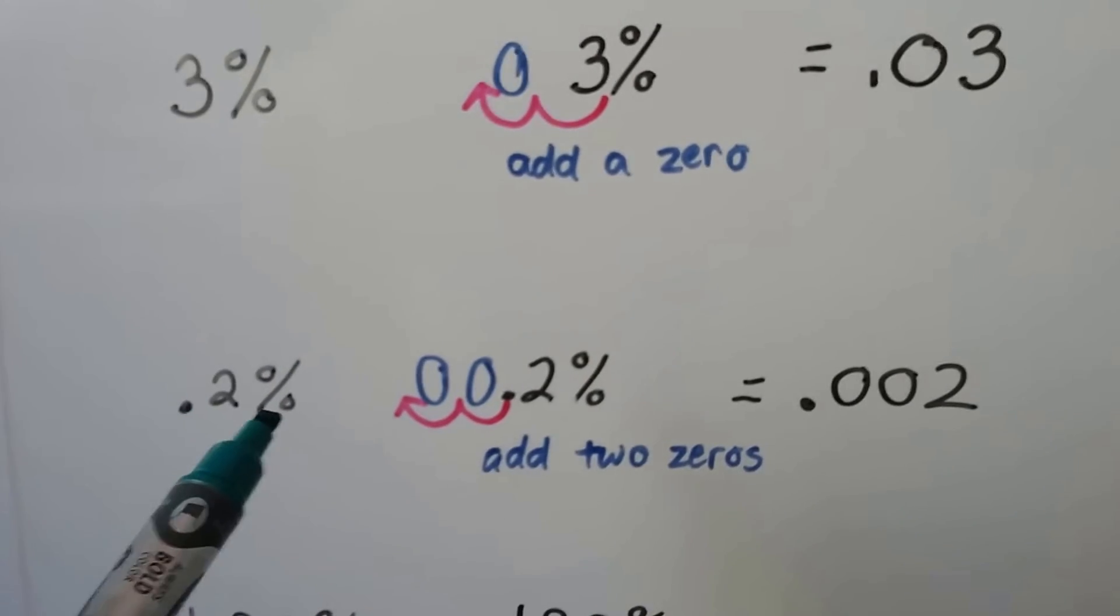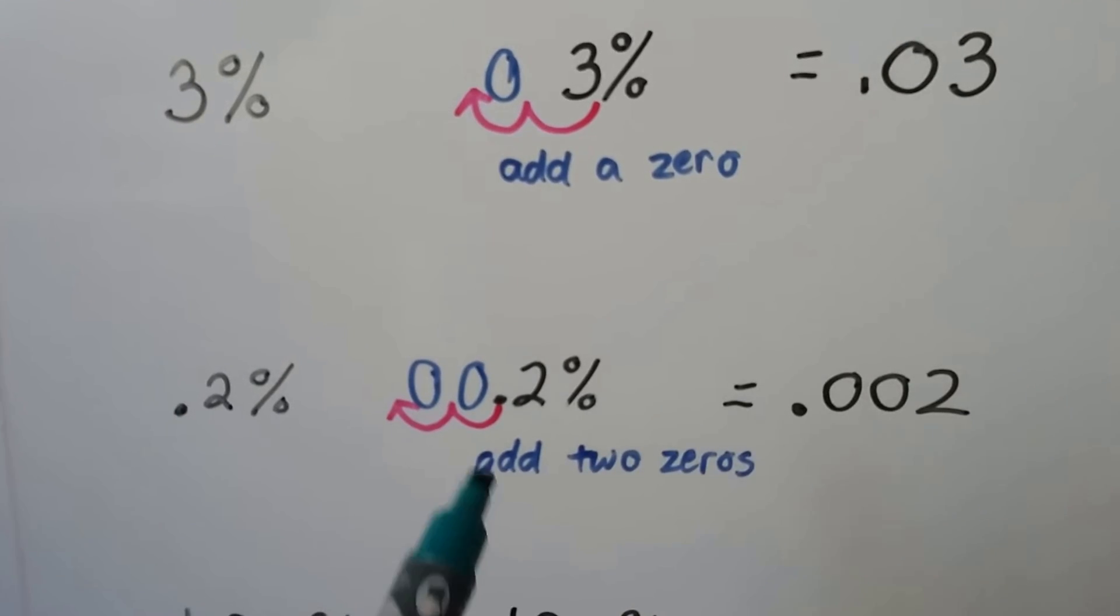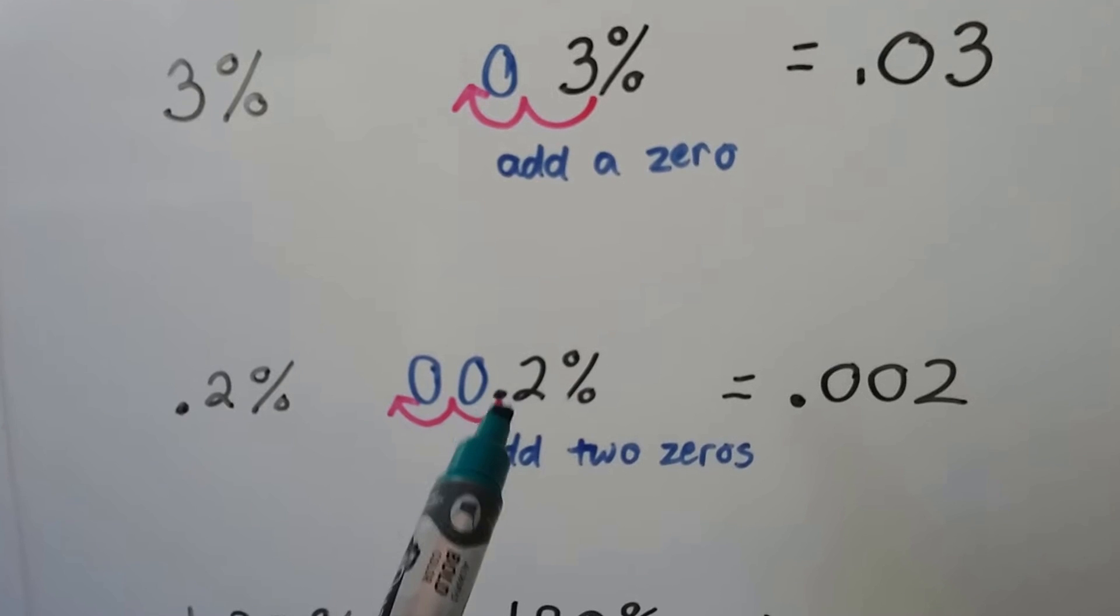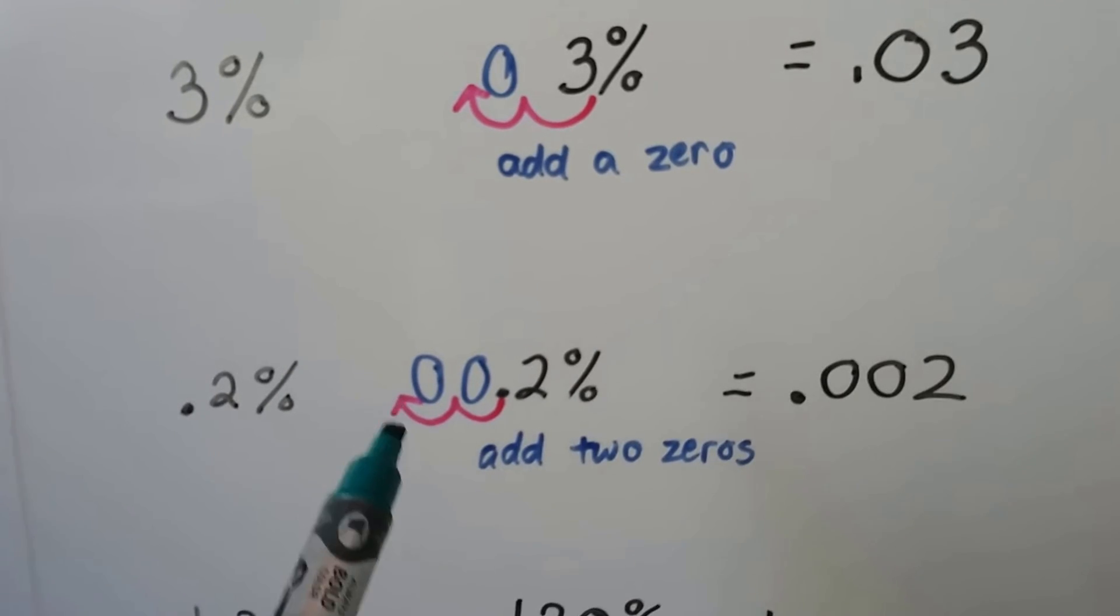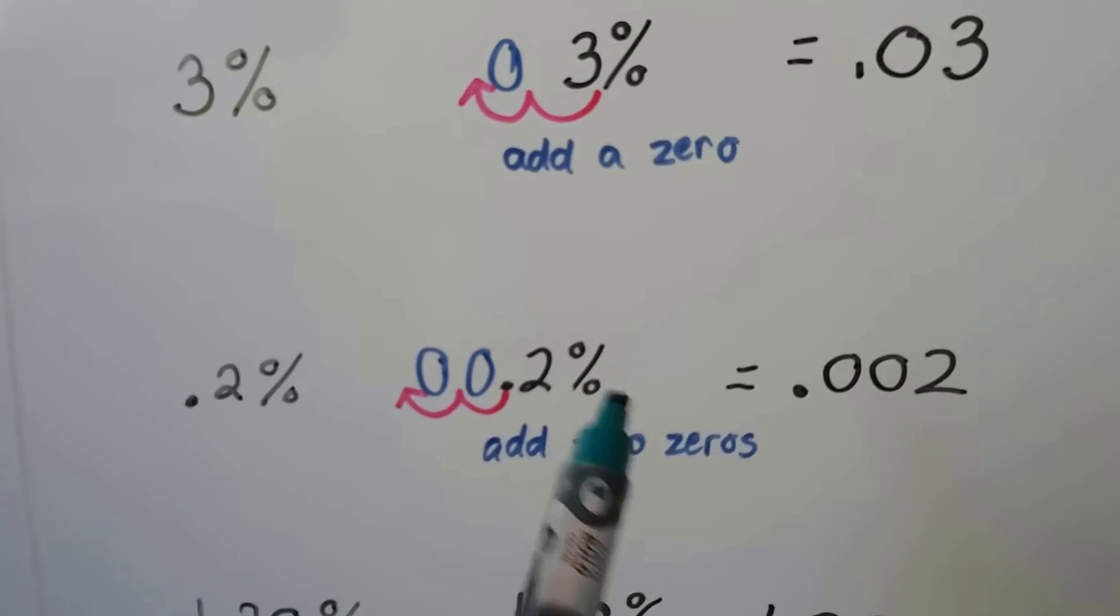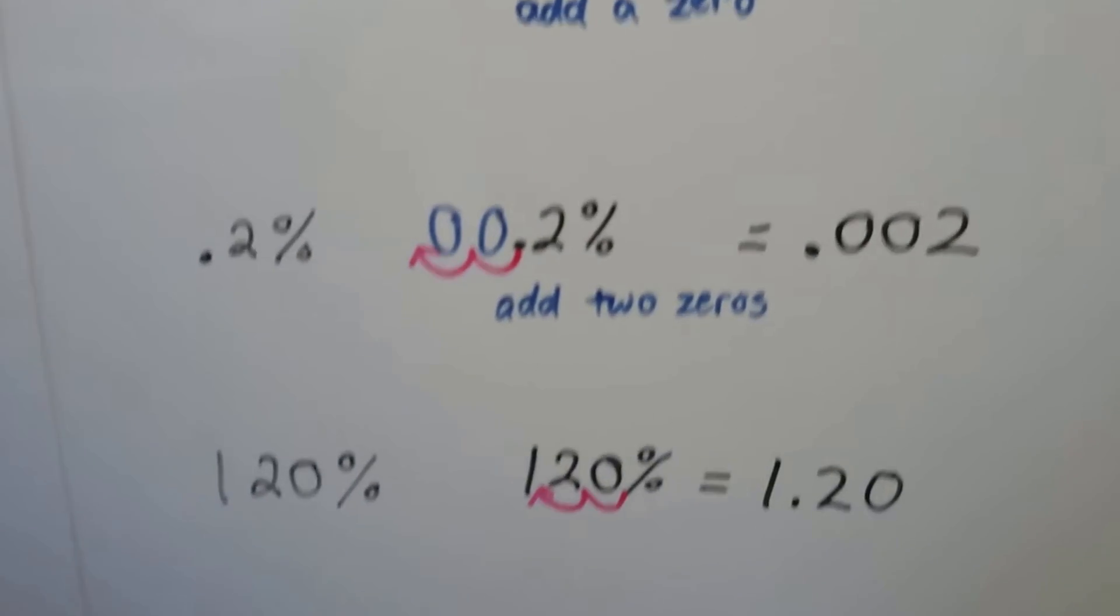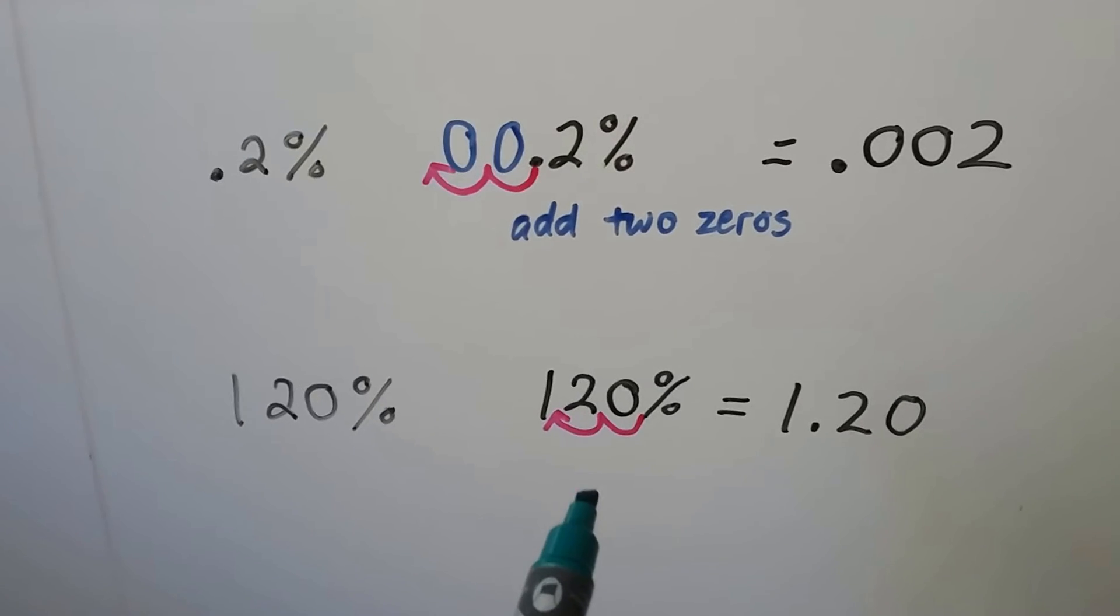Now we have 0.2%. So that's not even 1%. It's 0.2%. We start from the decimal place and go one, two hops. That means we have to add two zeros for placeholders, and we drop off the percentage sign and get 0.002. Just remember the two hops and getting rid of the sign.